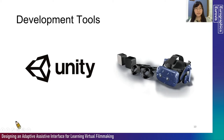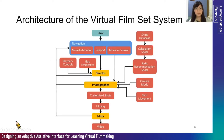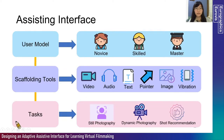We develop our system using Unity 3D, running on the HTC Vive. The architecture of the virtual film set system has characters the user can act as — director, photographer, or editor — and features such as playback controls and god's perspective. We also created a shot database to provide shot recommendations to assist the user. The assisting interface has three user models: novice, skilled, and master. We provide scaffolding tools including video, audio, text, pointer, image, and vibration to assist the user in finishing the assigned tasks.